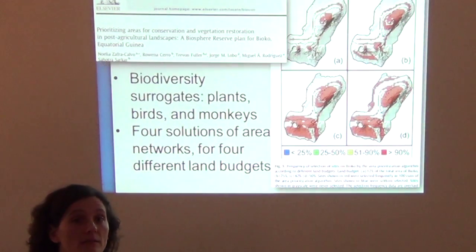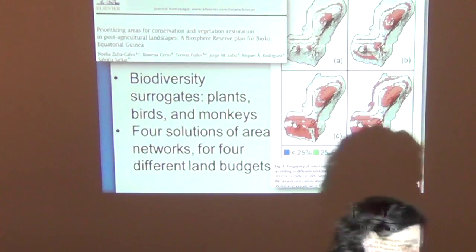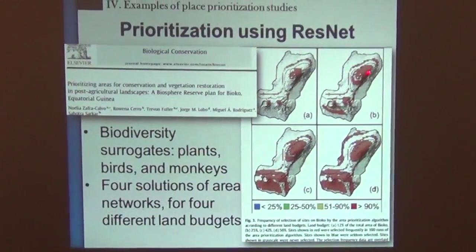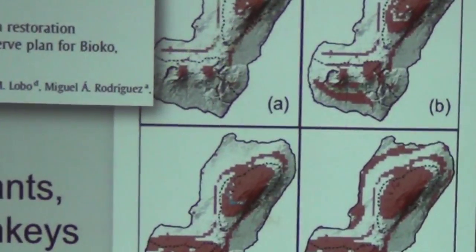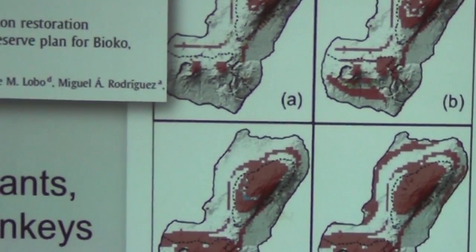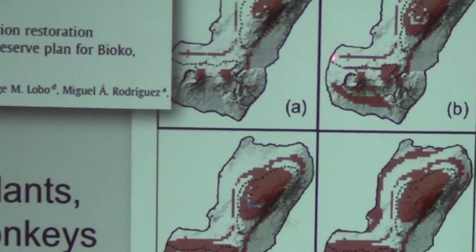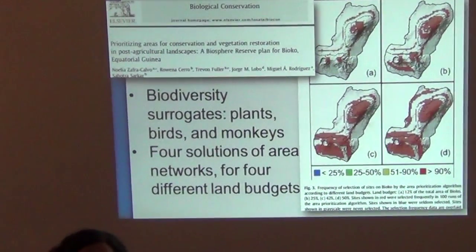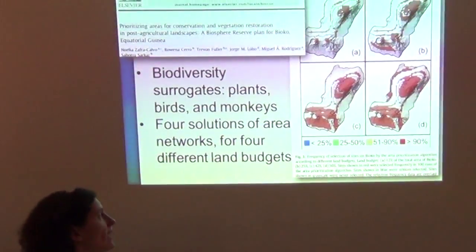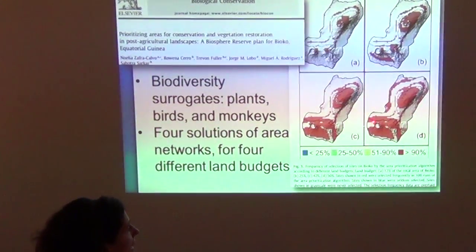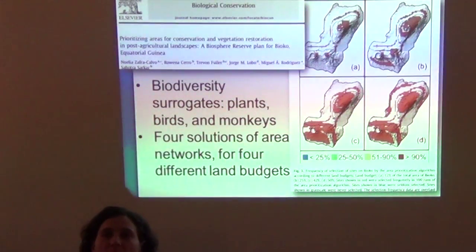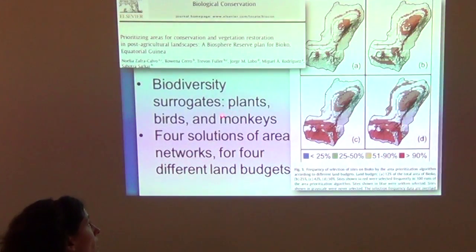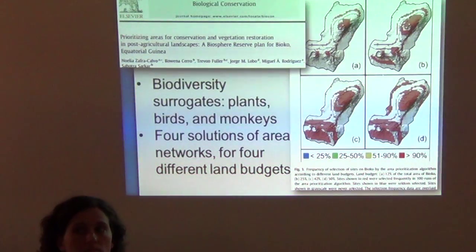The dominant red color across the maps indicates strong agreement among the 100 algorithm iterations — which is a good sign, as we want solutions to converge. The dotted lines represent existing protected areas, and what the researchers are proposing are additional areas to complement current protection, using plants, birds, and monkeys as biodiversity surrogates.